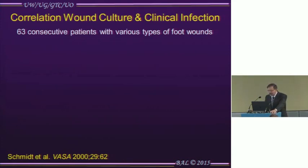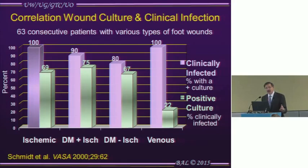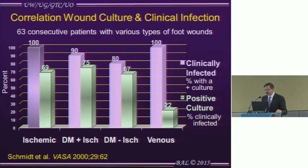Let's go back a few years. This paper is 15 years old, and it looks at a very simple question: 63 consecutive patients with a variety of foot wounds. In purple, you see patients who are clinically infected based upon what the treating clinician thought, and what percentage had a positive culture. Not surprisingly, the majority did, although in some wounds like diabetic ischemic wounds, only 80% did. But flip that around — look at patients with a positive culture and ask what percentage were actually clinically infected — and you see rates as low as 20% on venous ulcers and no higher than 90%. So a lot of uninfected wounds are being treated.